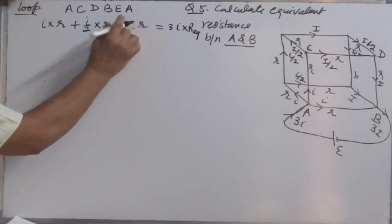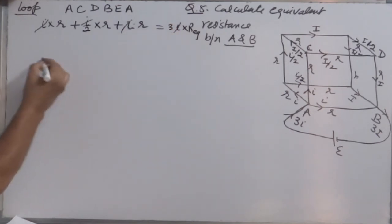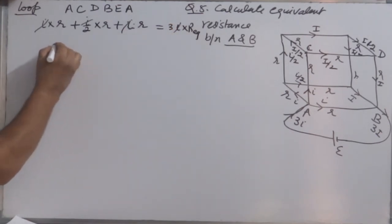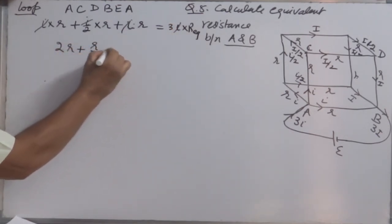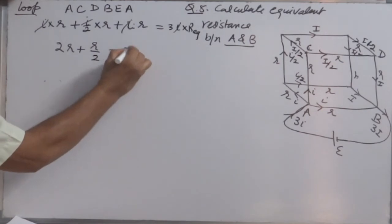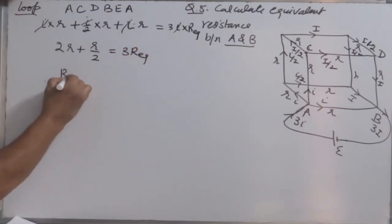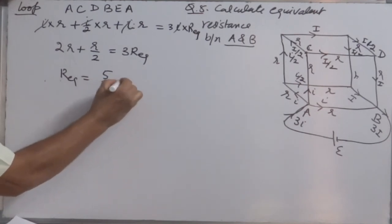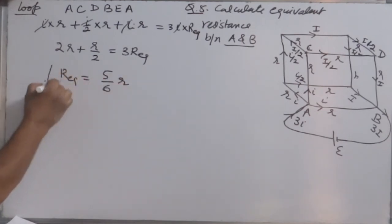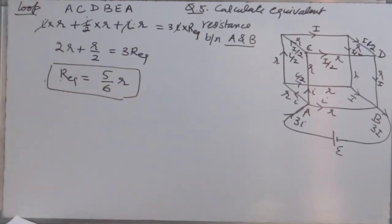Checking: I×R + (I/2)×R + I×R = 3I×R_equivalent. Cancelling I: R + R/2 + R = 3R_equivalent, so 5R/2 = 3R_equivalent, giving R_equivalent = 5R/6.